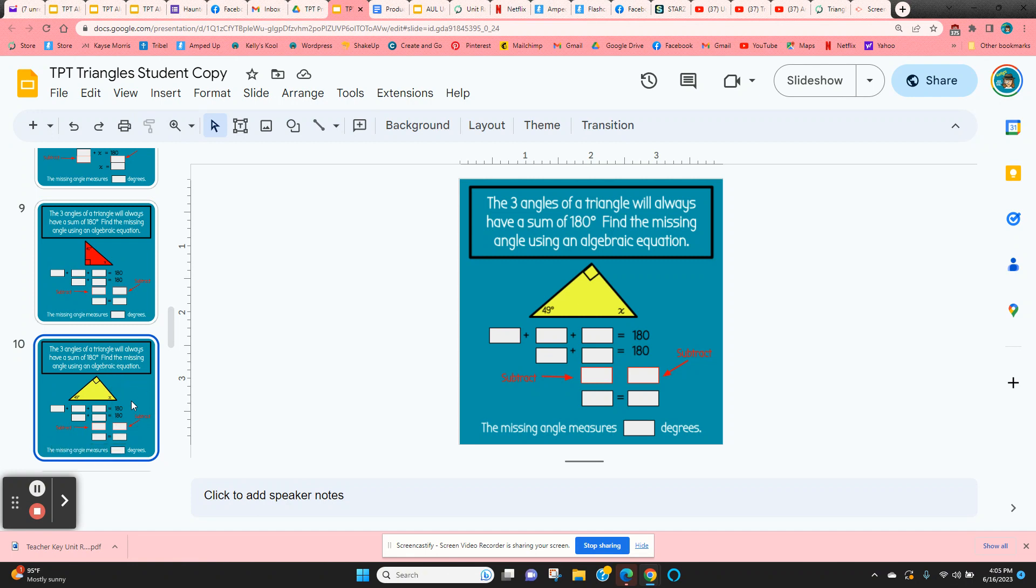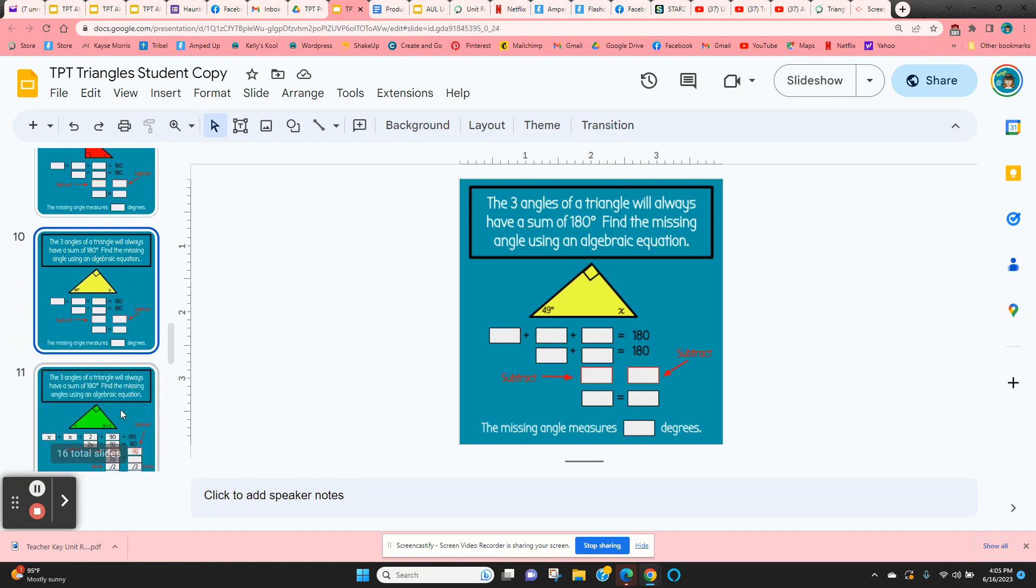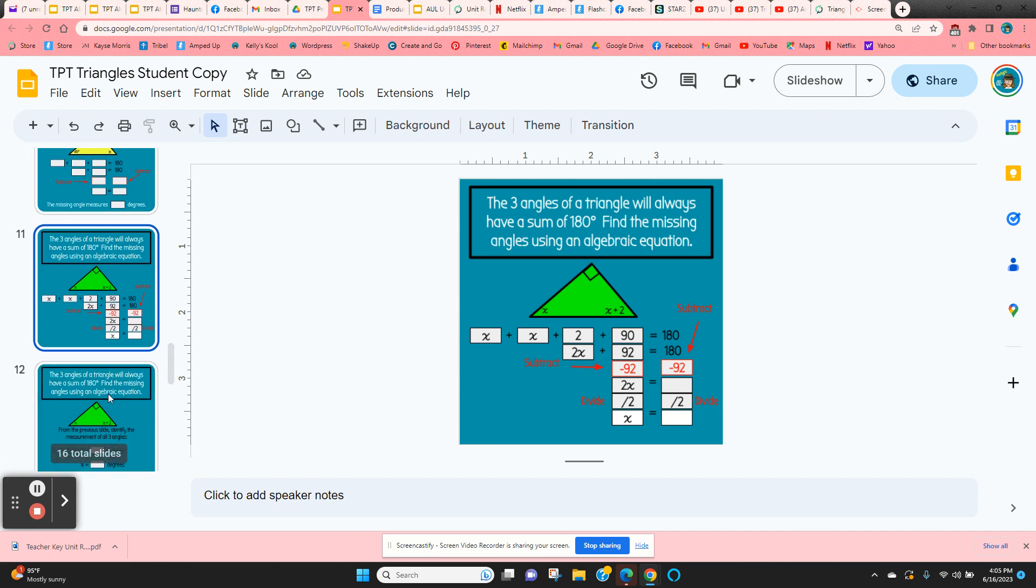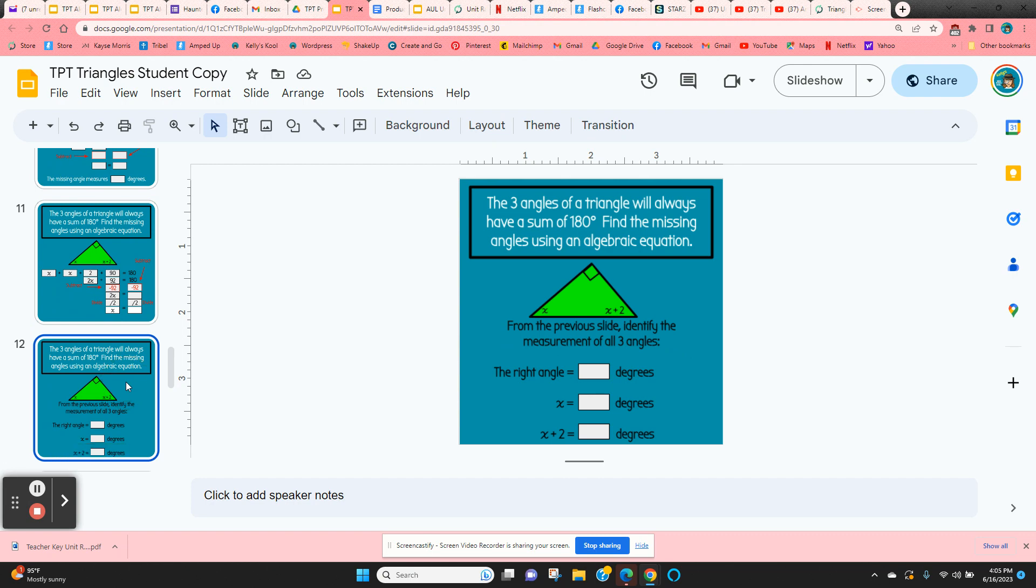Same thing on the next one, just a different type of triangle. And then they're going to come to a triangle where they have variables on two of the angles. So here they have to add x plus x plus 2 plus 90 equals 180. So this one's mostly done for them. All they have to do is give the answer here when they subtract and then divide by 2. And then they have to give the three angles of the triangle, what they all three measure.